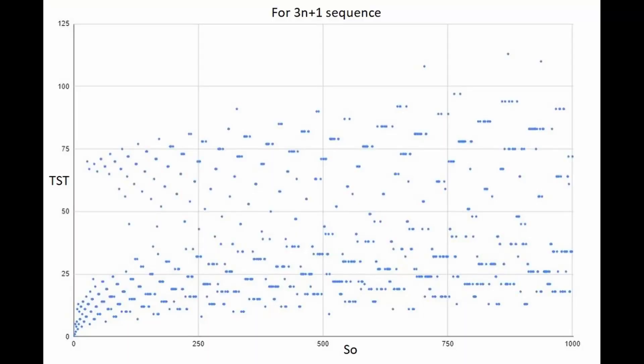Here is a graph of S0 versus the total stopping time for S0 from 1 to 1,000. I'm sure you've seen this before. The TST going from one S value to the next appears to be chaotic. But when you look at many S0 values in this way, it appears to be more organized — more like a 2D diffraction pattern.